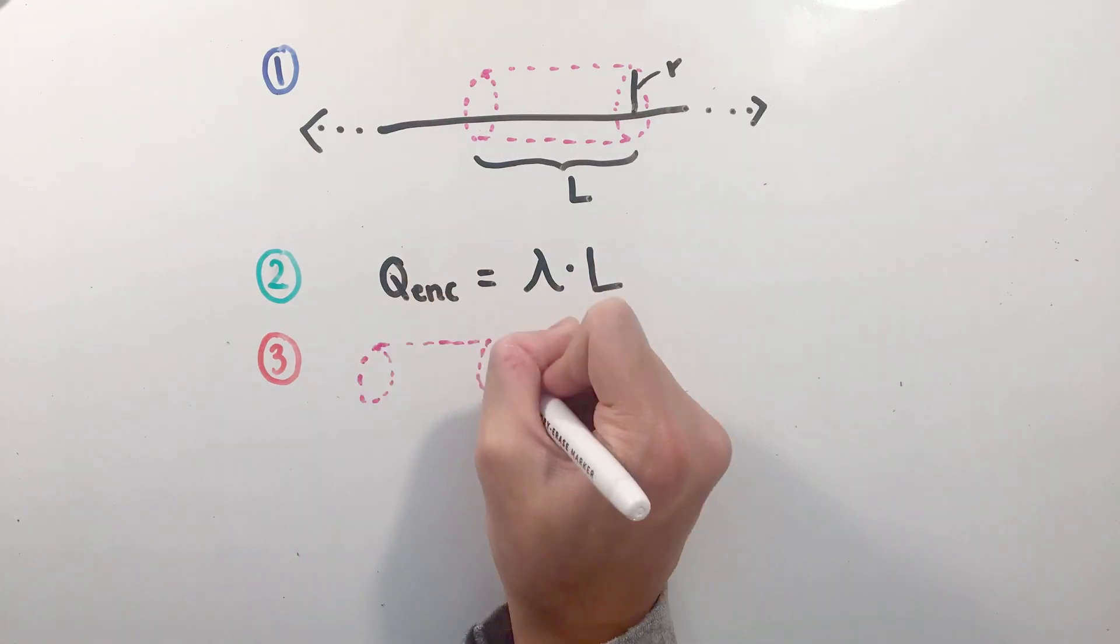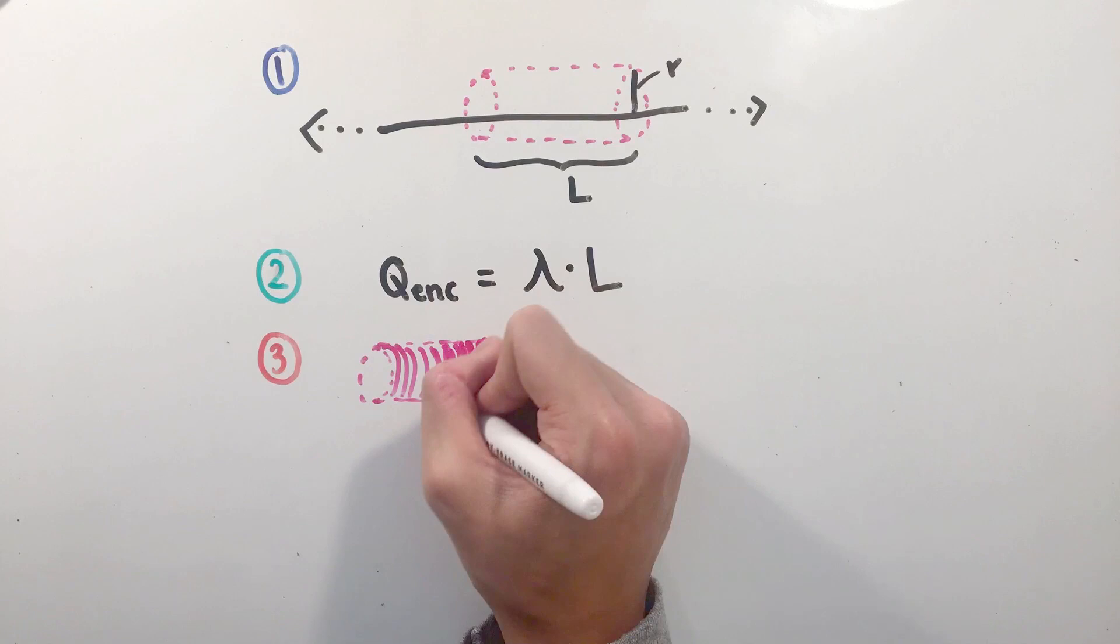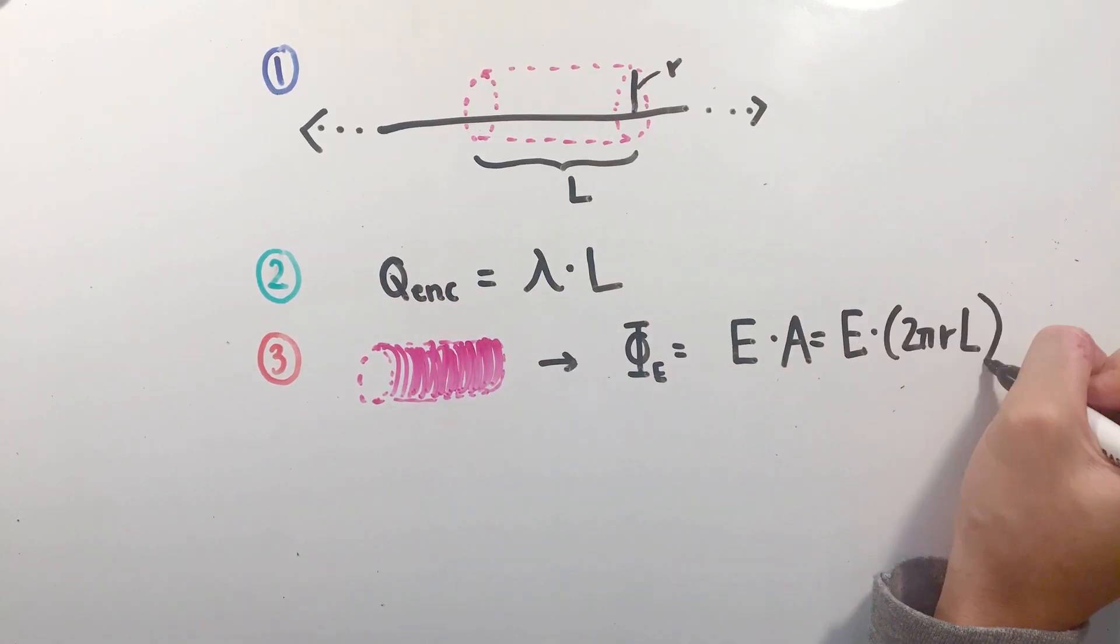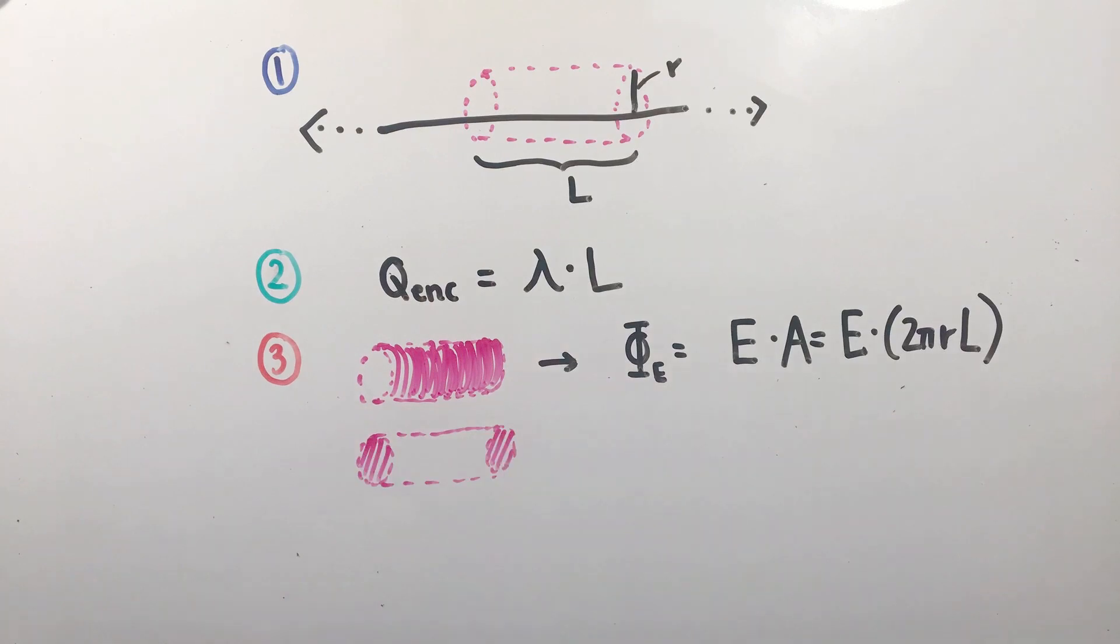Because we know that the electric field must point radially away from our axis, the lateral surface area flux calculation can simply be reduced to E times A, or E times 2πRL, as our E and A vectors will always align parallel. For the two caps of our cylinder, the electric flux is actually 0 through them, as the electric field vector and A vectors will be perpendicular, so their dot product will become 0.